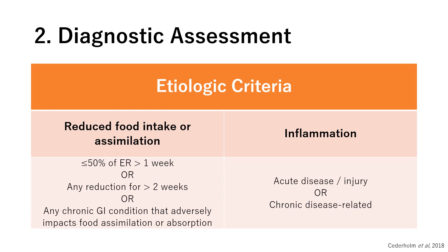Inflammatory markers such as fever, negative nitrogen balance, elevated resting energy expenditure, C-reactive protein, white blood cell count, albumin, and pre-albumin can be used to identify inflammation. Acute inflammation includes injuries such as major infections, burns, trauma, and closed head injury, whereas chronic inflammation is seen with chronic organ diseases such as COPD, congestive cardiac failure, rheumatoid arthritis, cancer, renal, and liver diseases. If the patient matches at least one etiologic and at least one phenotypic criterion, you can proceed to level three: diagnosis.